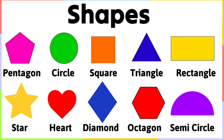Come, let's revise all the shapes that we learnt: pentagon, circle, square, triangle, rectangle, star, heart, diamond, octagon, and semicircle.